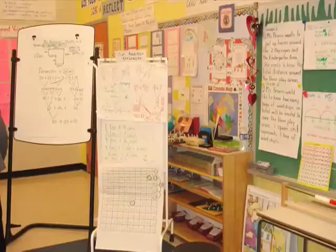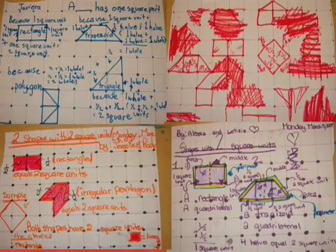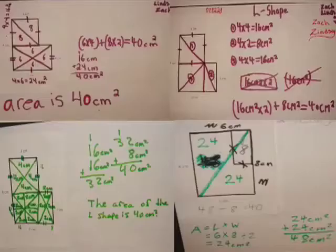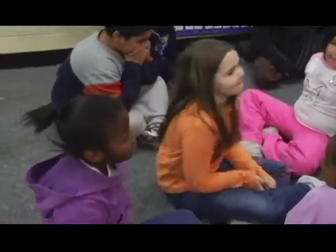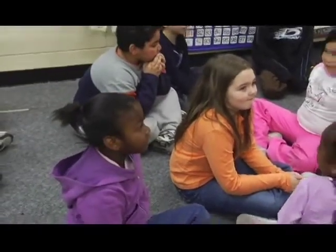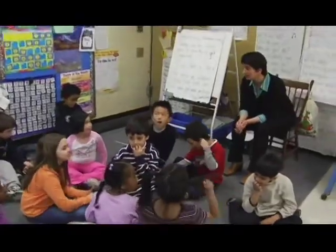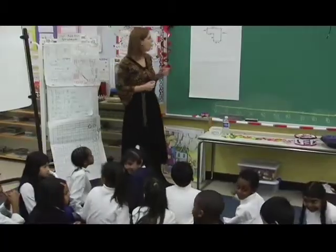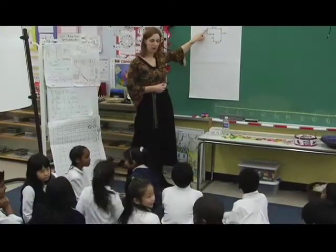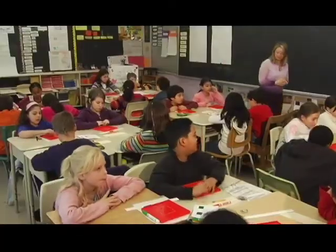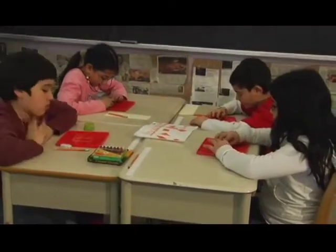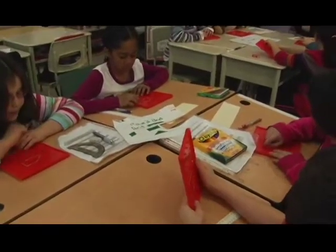A strategy wall is similar to a word wall and is developed in the same way. The teacher, in helping students to reflect on a day's lesson, asks them what strategies they used or what approaches they tried. Fostering positive attitudes and interactions for learning mathematics and problem-solving can be led by the teacher in terms of modeling and encouraging positive attitudes, confidence and perseverance when solving problems, and persevering to make sense of student ideas and responses. The teacher can communicate to students and other teachers using precise oral and written mathematical language. As the teacher watches students' mathematical actions and gestures, the teacher might ask them to explain their thinking to one another and to the teacher.